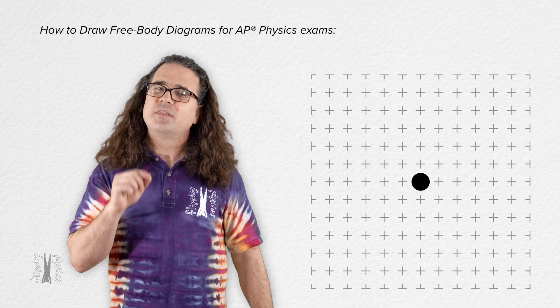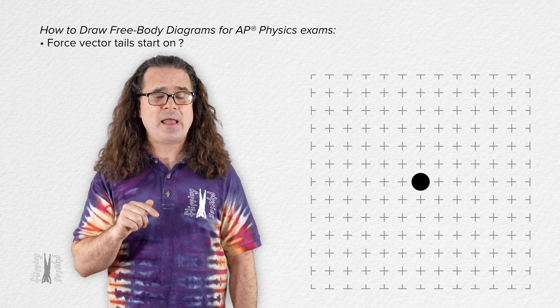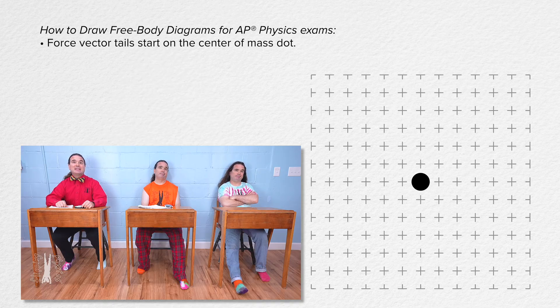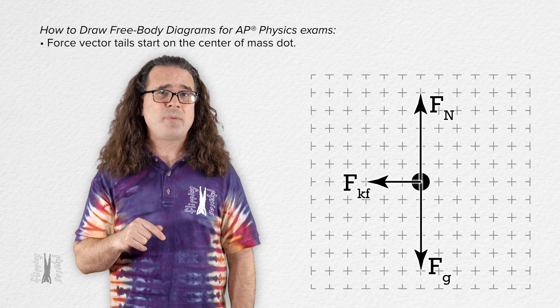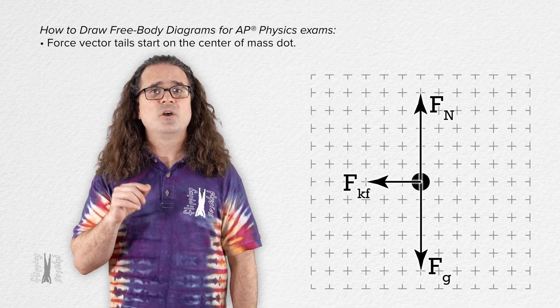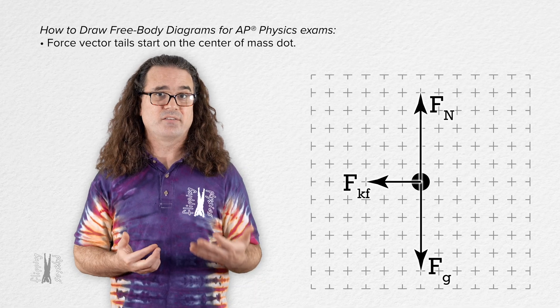Okay, class. The tail of every force vector arrow you draw on a free body diagram starts where? On the center of mass. Correct. For example, you can see this free body diagram has all three force vector arrows starting at the central dot, which represents the center of mass of the object or system, and pointing away from that center of mass.